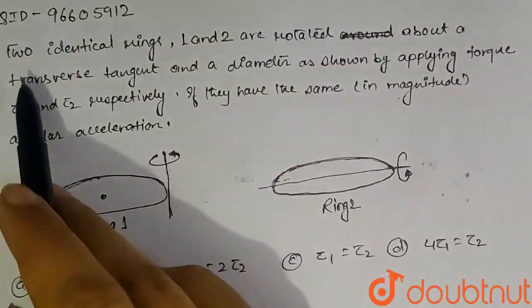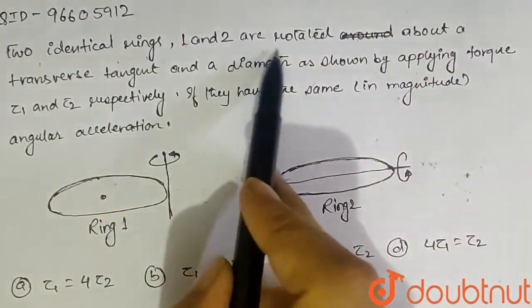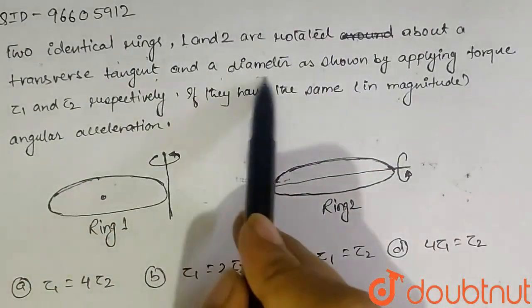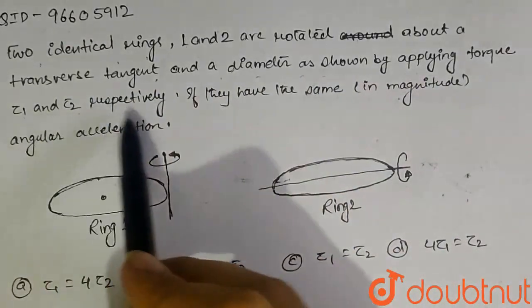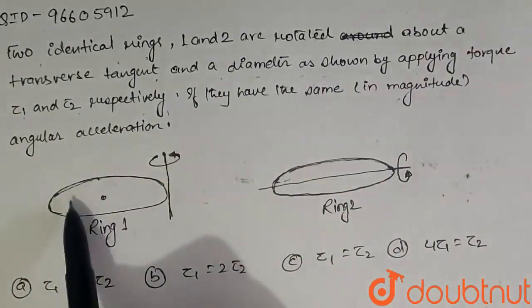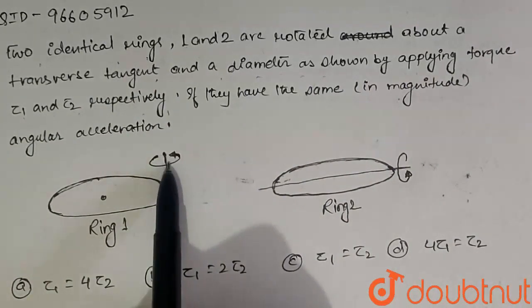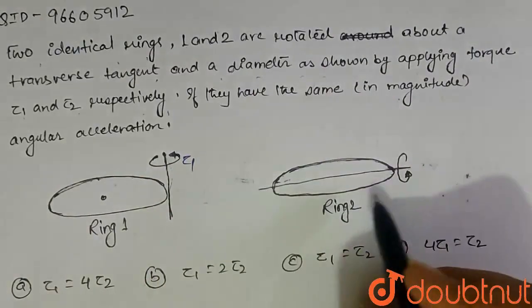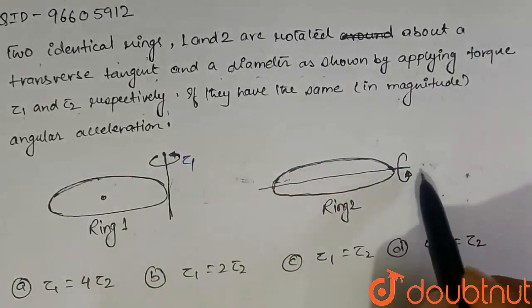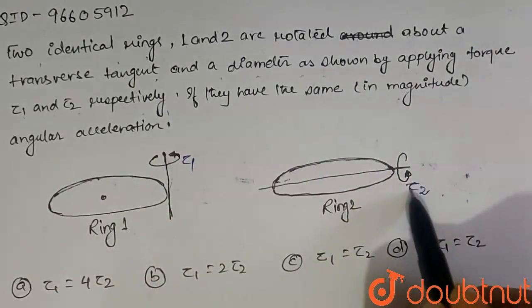So our question is saying: two identical rings, one and two, are rotated about a transverse tangent and a diameter as shown by applying tau1 and tau2 respectively. We have two rings. The first one rotates about the torque tau1 and the second one about the diameter with tau2.